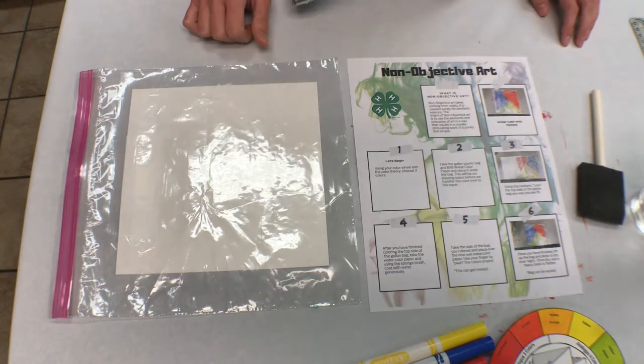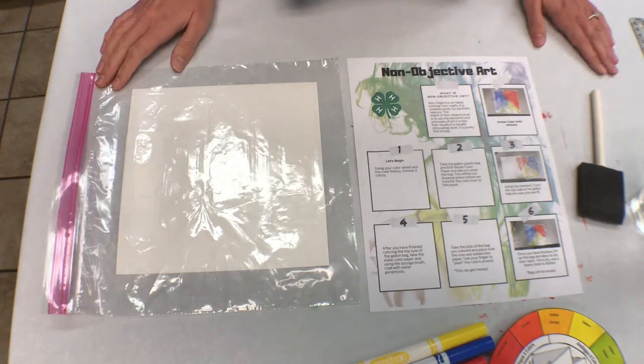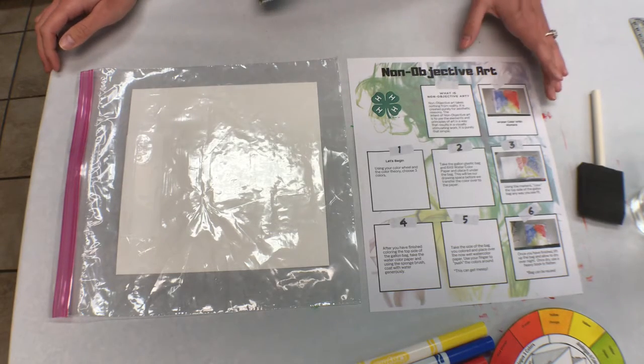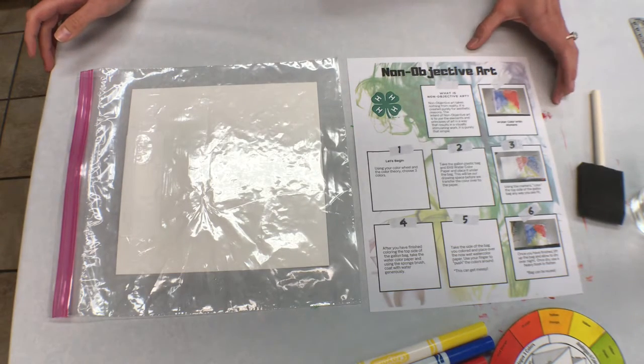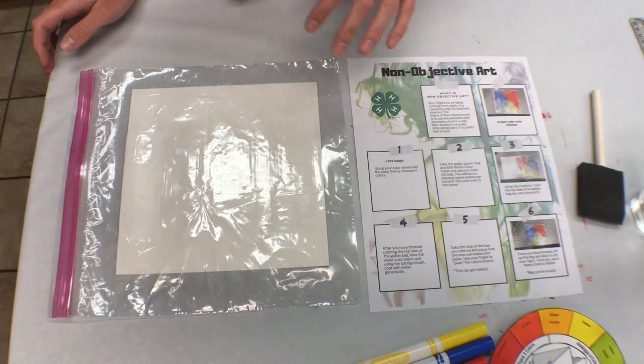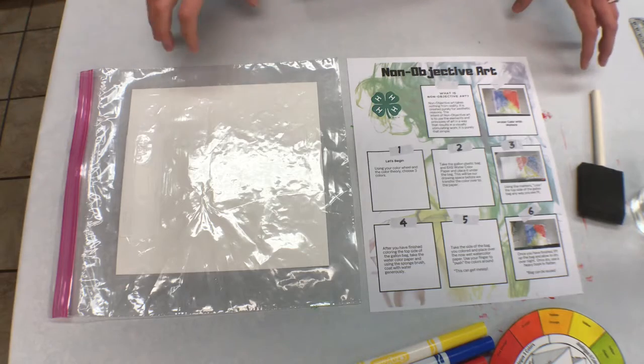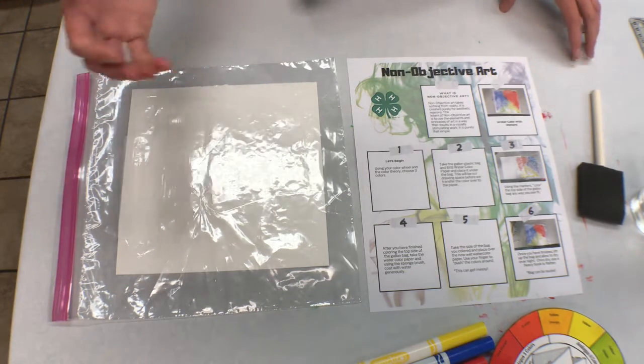All right, so now we're going to start our non-objective art activity. Non-objective art differs from abstract art because abstract art, while at first glance not easily identifiable, does have some identifiable objects or purpose to the art.